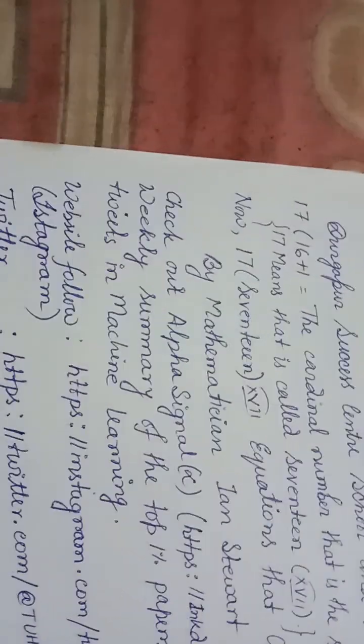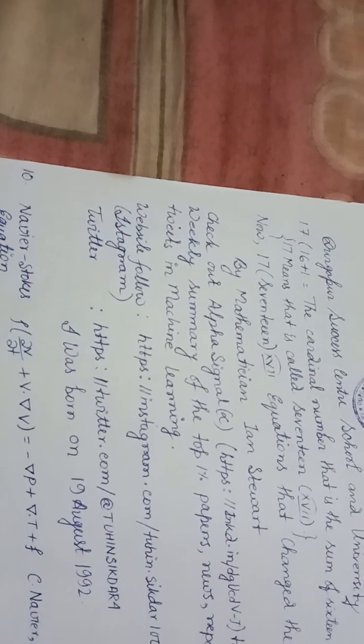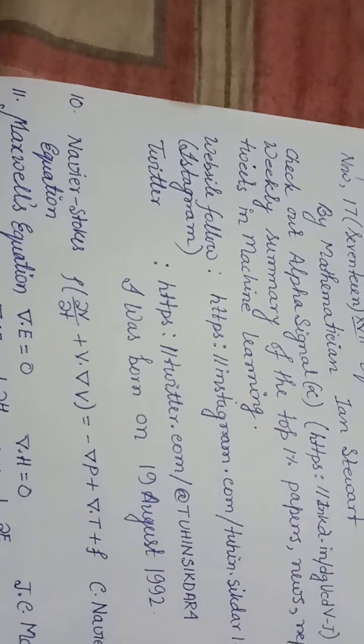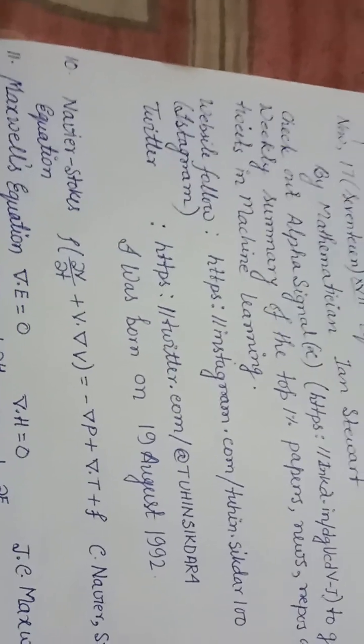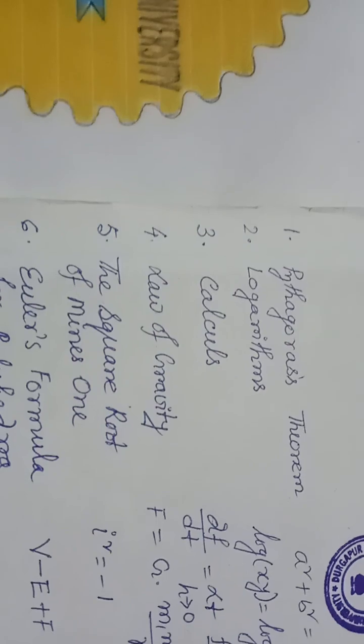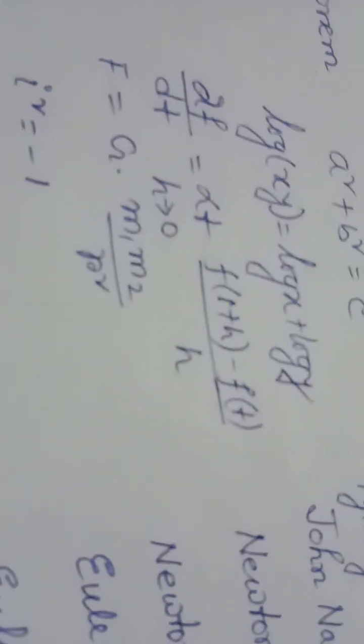Durgapur Success Center School and University. 17, 16 plus 1, the cardinal number that is the sum of 16 and 1. 17 equations change the world by mathematicians. Check out alpha signal. The websites are given below for weekly summary of the top 1% papers, news reports, and tweets in machine learning. Follow my Instagram. Now first is Pythagoras theorem: formula is a² + b² = c². Scientist name Pythagoras, 530 BC.